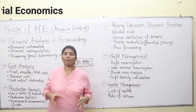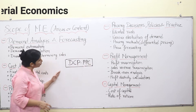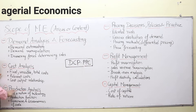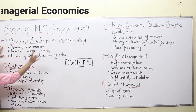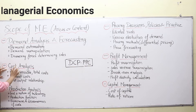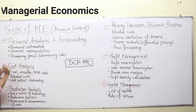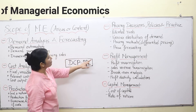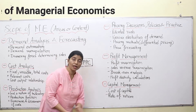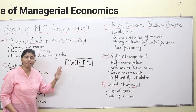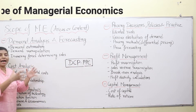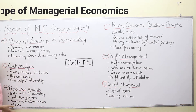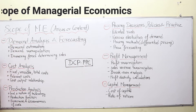For understanding the scope of managerial economics, we have framed a code comprising the first alphabets of all these terms. D for demand analysis and forecasting, C for cost analysis, P for production analysis, then P for pricing decisions, policies and practice, then P for profit management, and C for capital management. So all these are the components of business management.